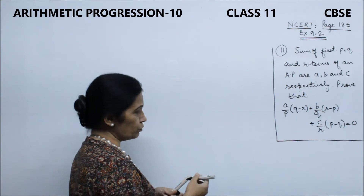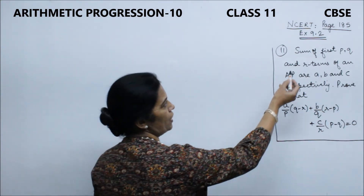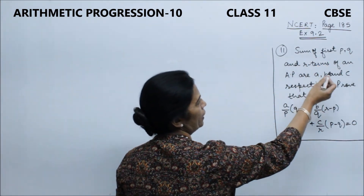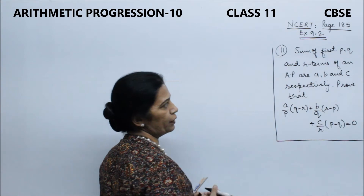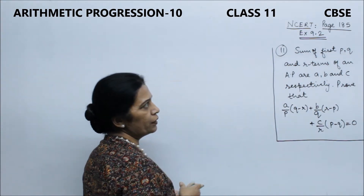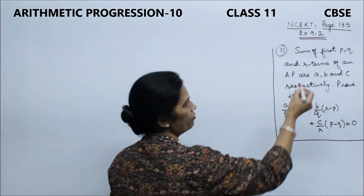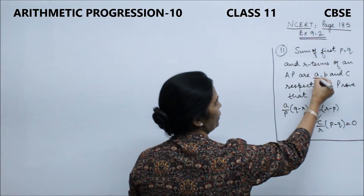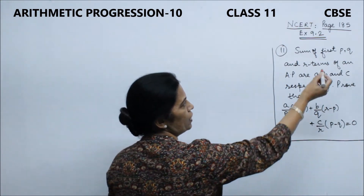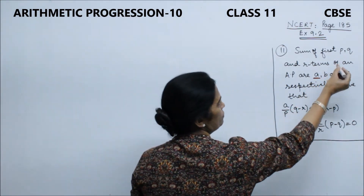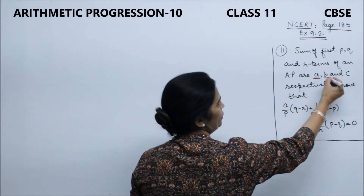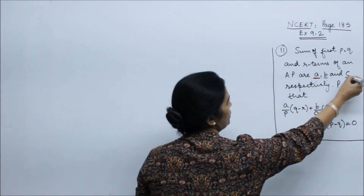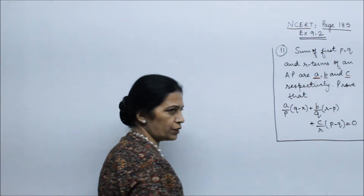So what is the question? Sum of first P, Q and R terms of an AP. Sum of first P terms is equal to A, sum of Q terms is equal to B, and sum of R terms is equal to C.